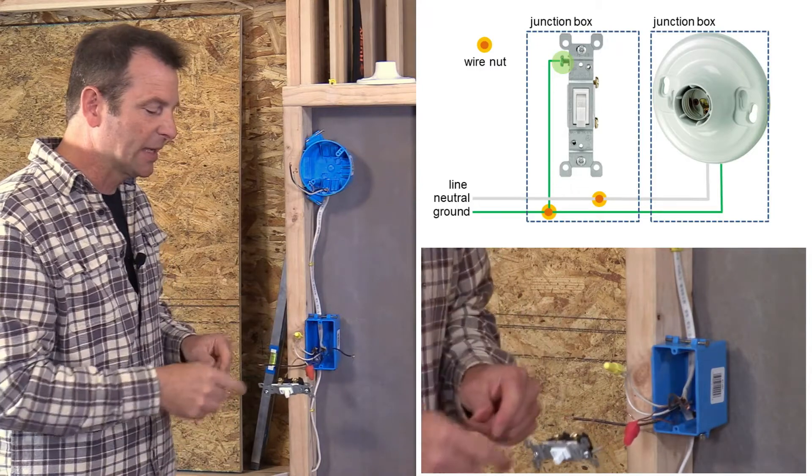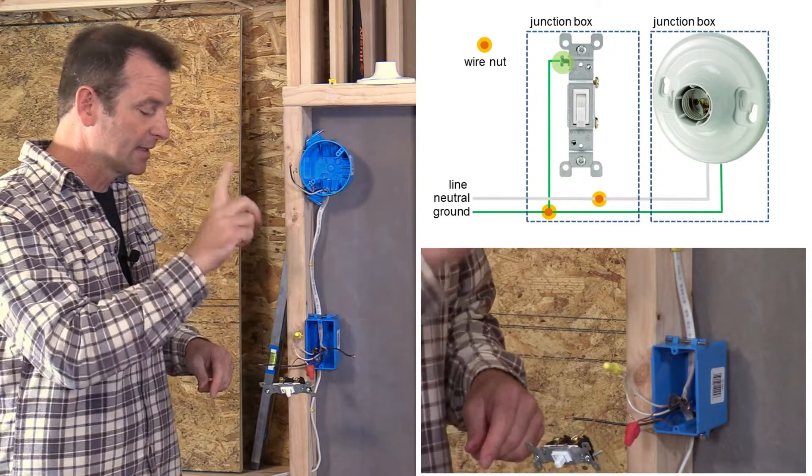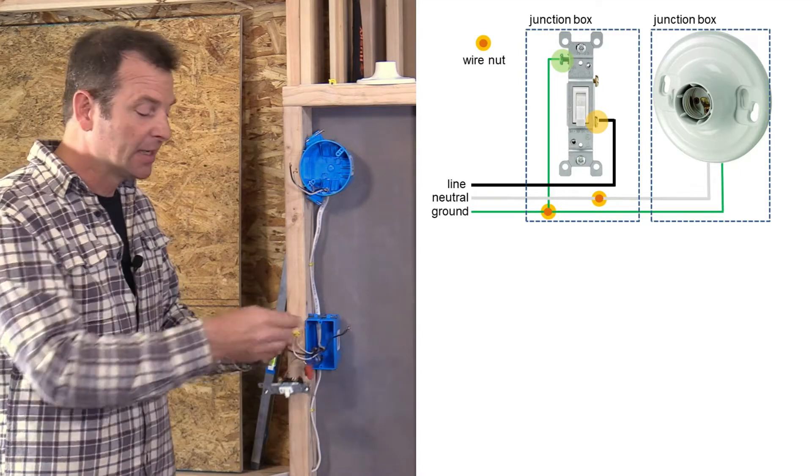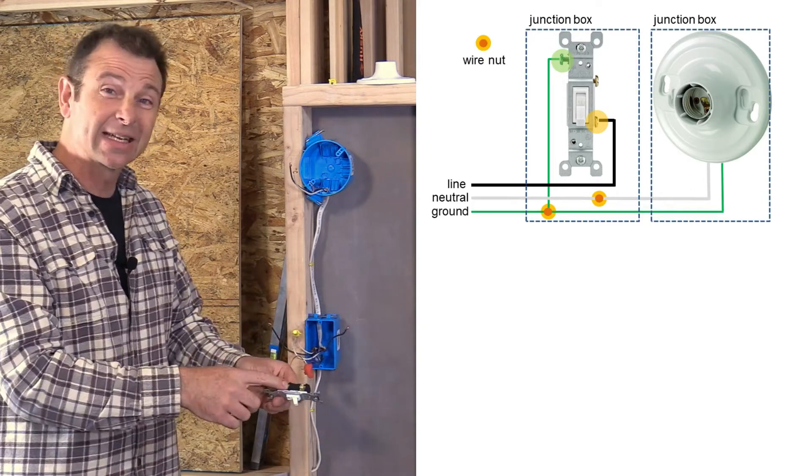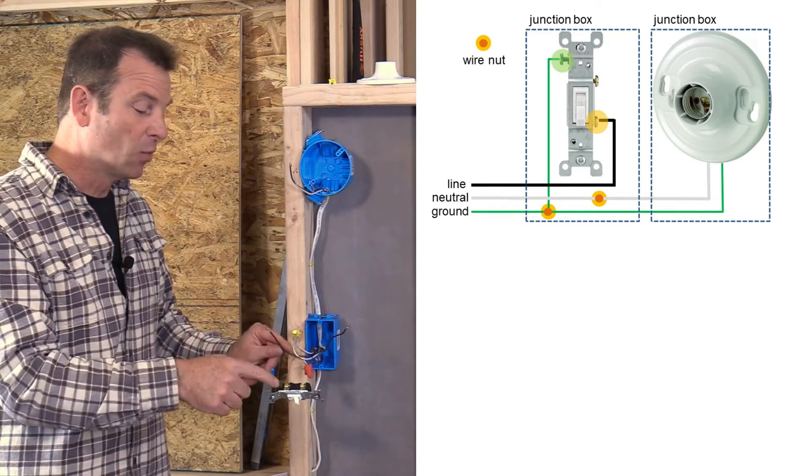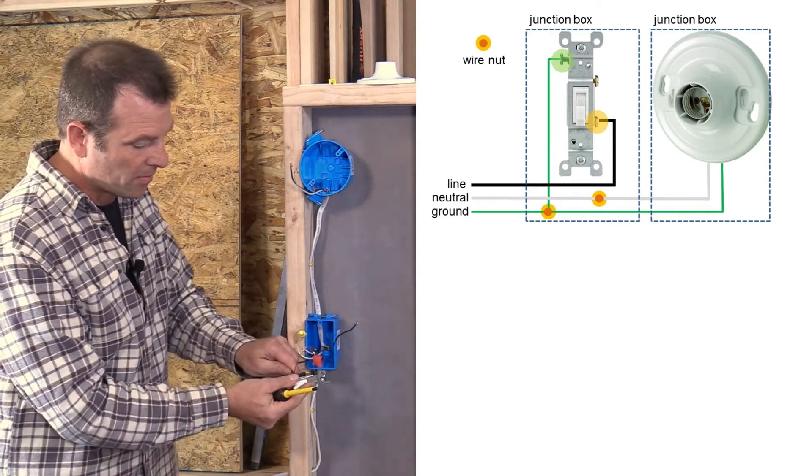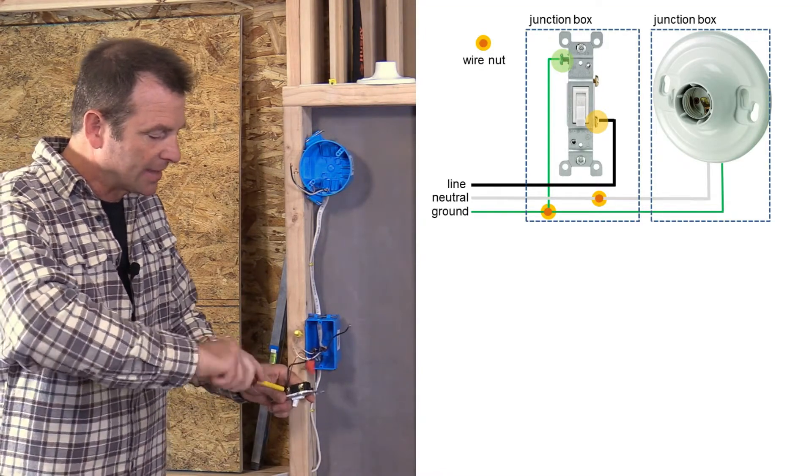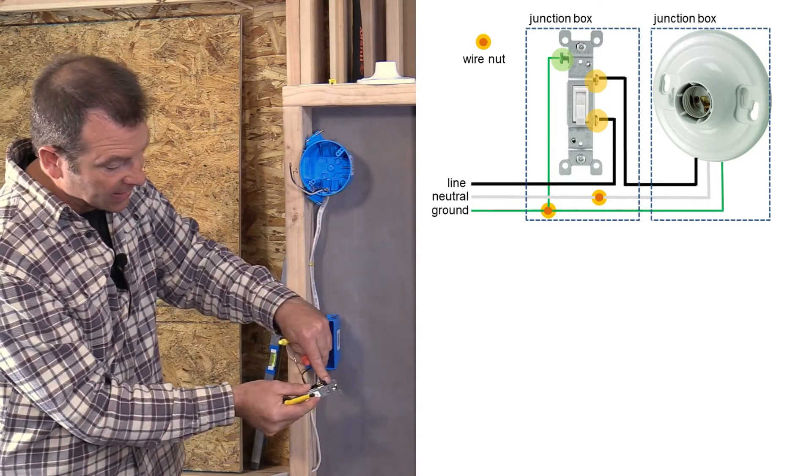So phase two is complete for the switch. I have my ground with my pigtail. And then I have my neutral wires connected that bypass my switch. Now I have two hot wires, black wires left. I have two terminals on this switch. So each one of these black wires is going to get connected to my single pole switch. And it does not matter which terminal goes where. So we just need one connection for each wire. So I'm going to connect this wire here. Make a nice tight turn on that screw. And then my other wire is going to connect to the other terminal.